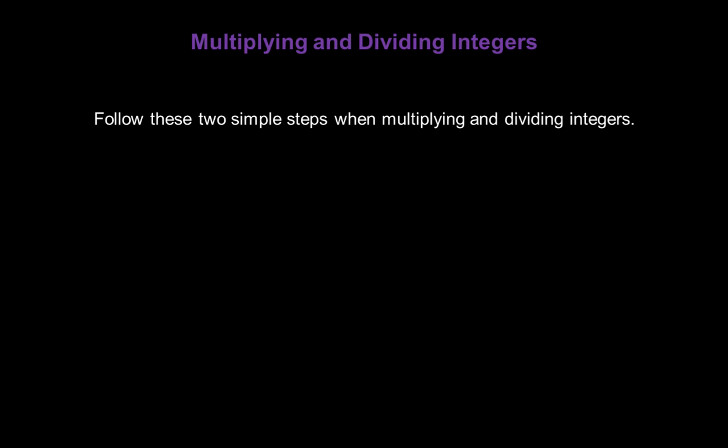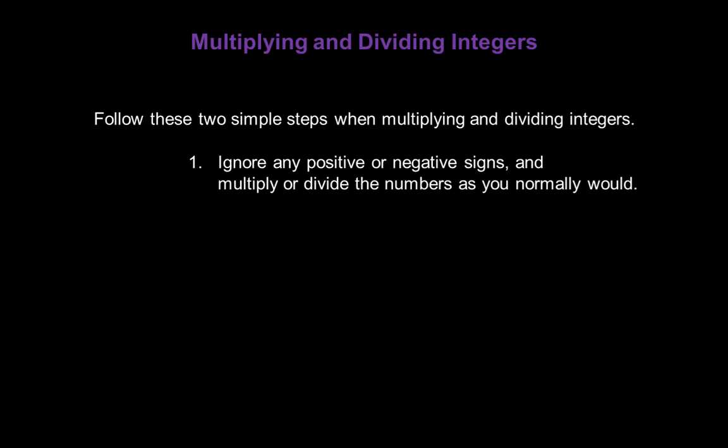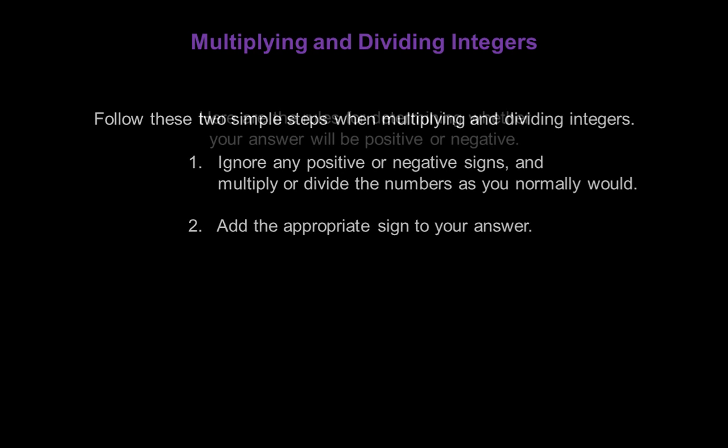We follow two simple steps when multiplying and dividing integers. First, ignore any positive or negative signs and multiply or divide the numbers as you normally would. Then, add the appropriate sign to your answer. Now, how do we determine the appropriate sign?